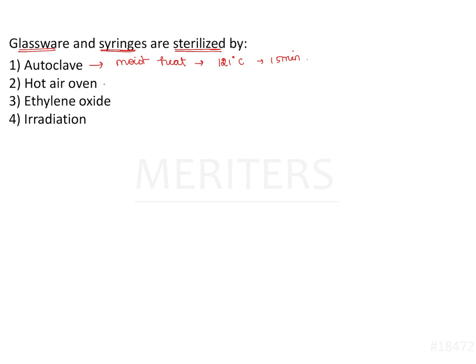Next is hot air oven, which brings about dry heat sterilization. It employs dry heat at a temperature of 160 degrees Celsius for two hours to bring about the required sterilization.